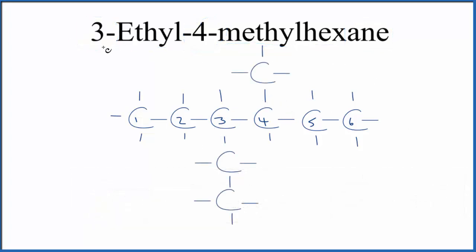So this is the structure for 3-ethyl-4-methylhexane. We have our longest chain. On the third carbon, we have that ethyl group, those two carbons surrounded by hydrogens. On the fourth carbon, we have our methyl group, which is just a CH3. Note that because it's an alkane, everything is single bonded.